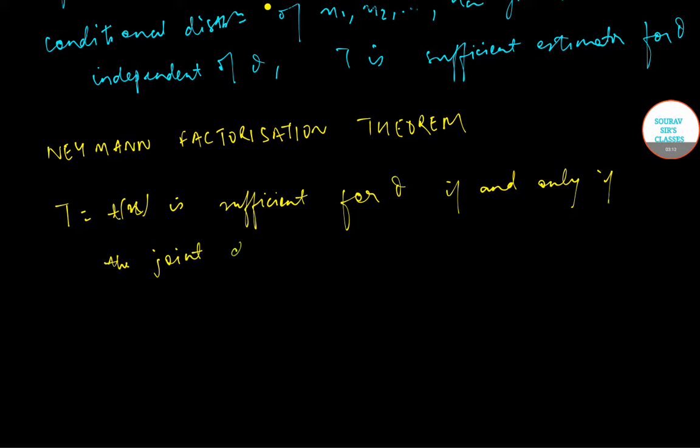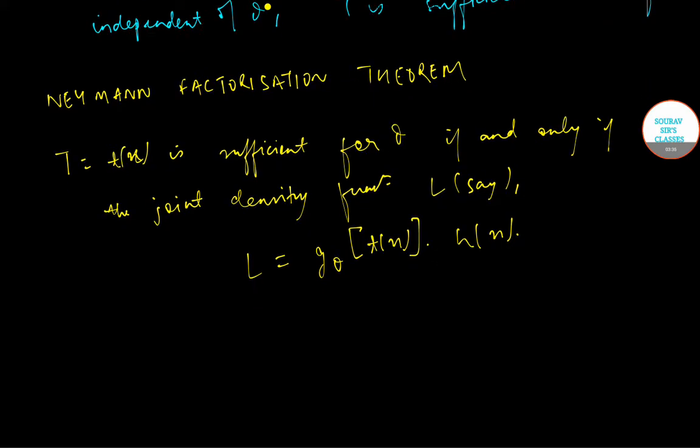the joint density function L of the sample values can be expressed in the form L is equal to g(theta, t(x)) times h(x), where g(theta, t(x)) depends on theta and x only through the value of t(x) and h(x) is independent of theta.